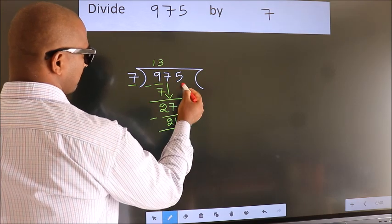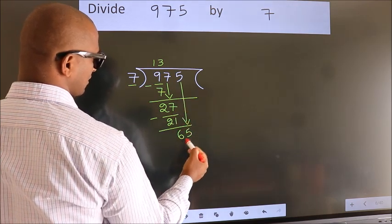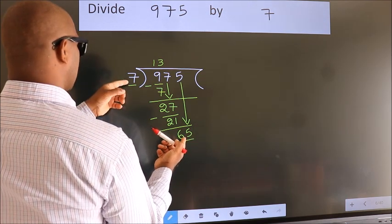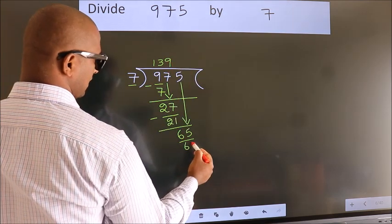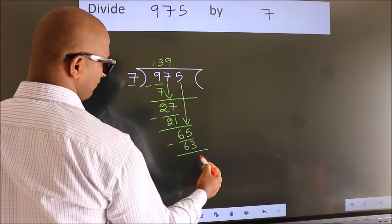After this, bring down the beside number. So 5 down. So 65. A number close to 65 in 7 table is 7 nines 63. Now we subtract. We get 2.